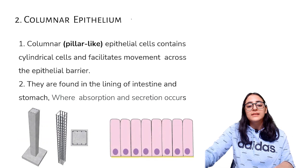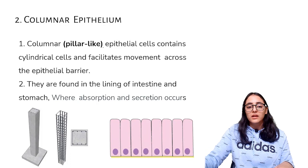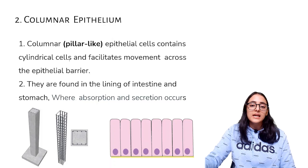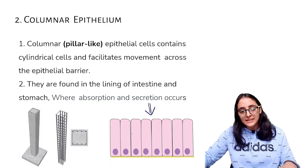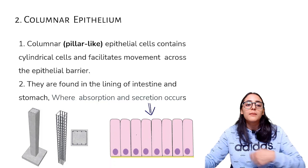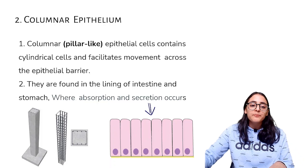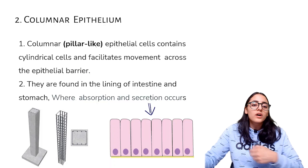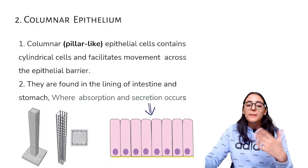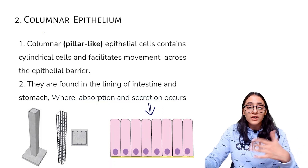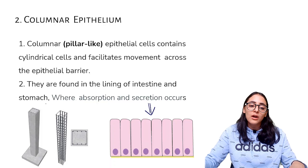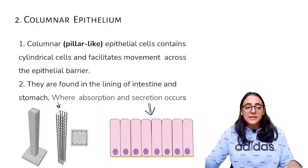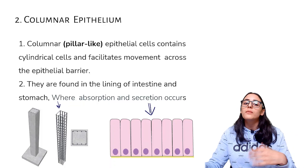Moving on to columnar epithelium — columnar means pillar-like. It contains cylindrical cells. The word columnar comes from column, which is a cylindrical pillar used in building construction. Columnar epithelium facilitates movement across the epithelial barrier.